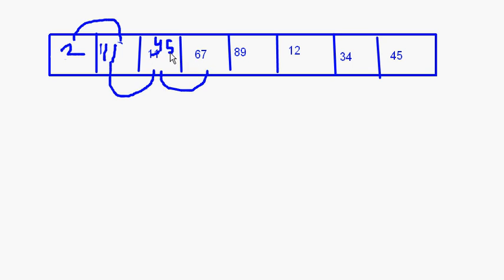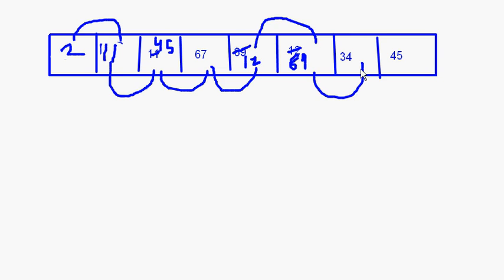Now we compare 45 and 67 — no change because 45 is less than 67. Then 67 and 89 — no change because 67 is less than 89. Then 89 and 12: 12 comes here and 89 goes there. Then 89 and 34: 34 is less than 89, so 34 comes and 89 goes there.